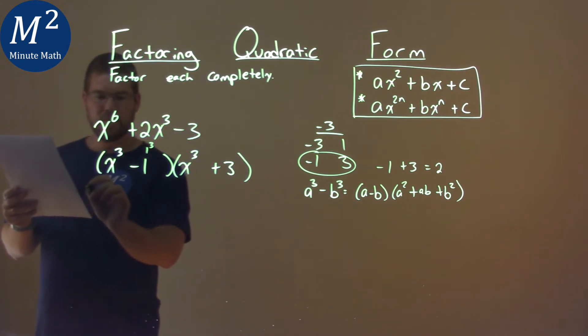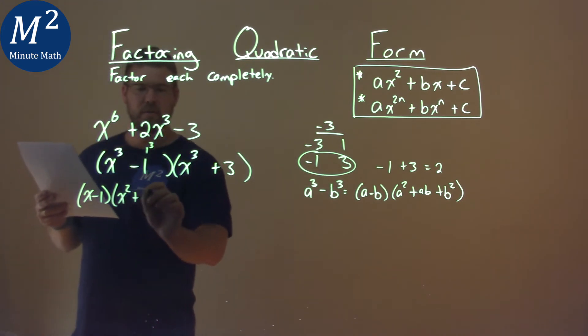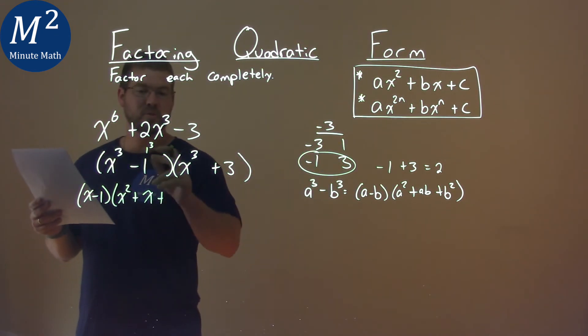We would have then here, the formula followed, x minus 1 times x squared plus, well, x times 1 is just x, plus, well, 1 squared is 1.